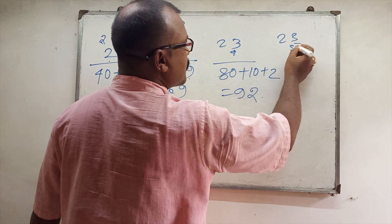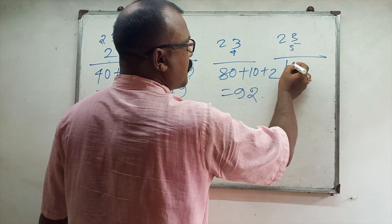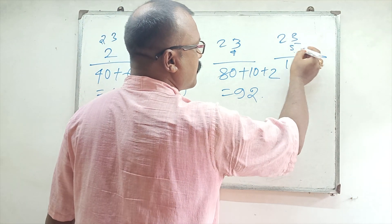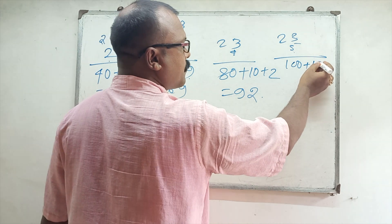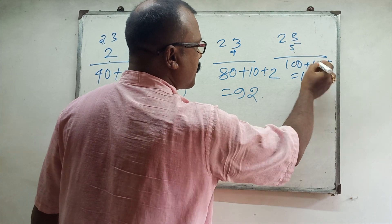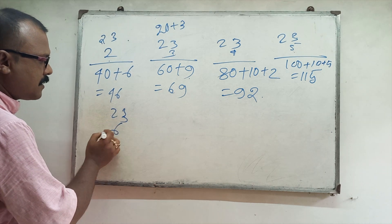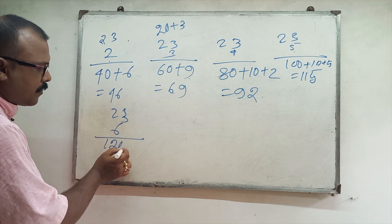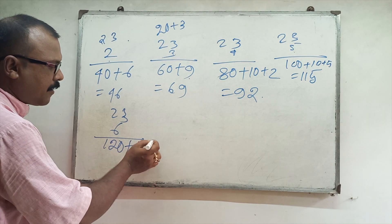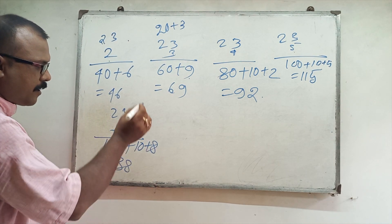23 fives: 100 plus 15, so 115. 3 fives are 15, that is 10 plus 5. 23 sixes: 120 plus 18, so 138.